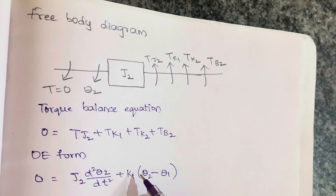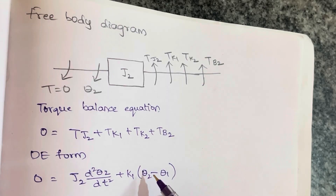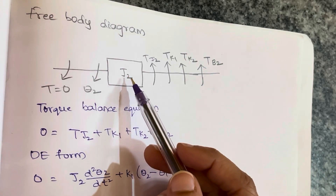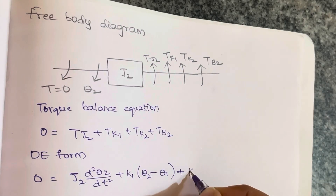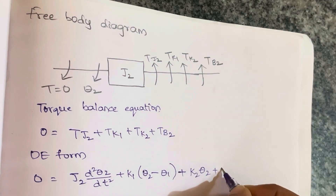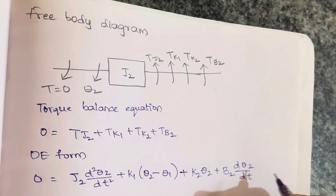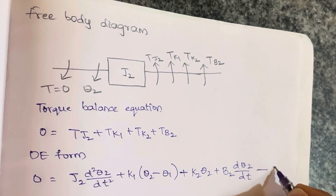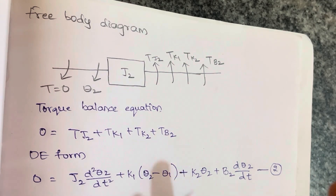The spring is between J1 and J2. Since I am solving for J2, I give preference to θ2 — the variable associated with J2. So we get plus K2·θ2 plus B2·dθ2/dt. Let us assume this as equation number 2. Up to here we have formed differential equations for both J1 and J2.